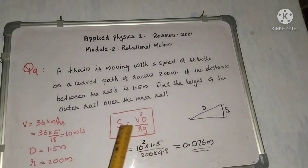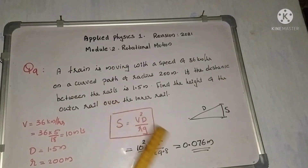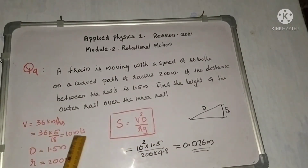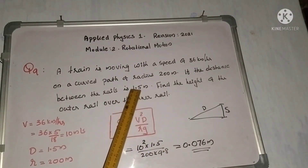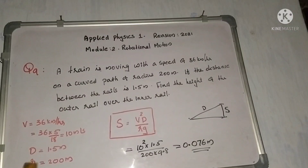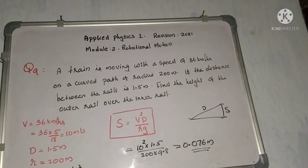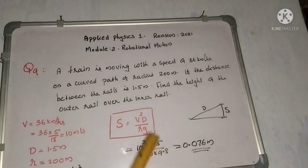Super elevation formula: S = v² × D / (R × g). Converting 36 km per hour by multiplying 5 by 18 gives 10 m per second. D = 1.5 m, R = 200 m, g = 9.8 m/s². Substituting gives 0.076 meters.